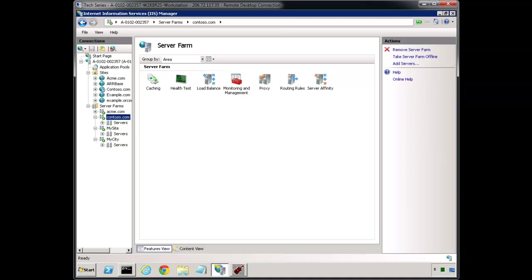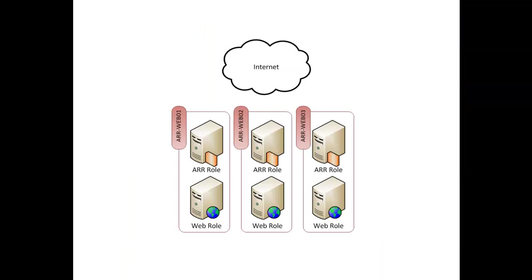Let's start by picturing a multi-server situation. In this diagram we have three servers: ARR web 01, 02, and 03. The ARR role takes the incoming request and hands it off to the web role. A request may come into any one of the three nodes — and coming up in the next couple of weeks I'll talk about how to load balance ARR itself. You can see the ARR role is completely independent of the web role, but we may not want to do this with six servers. We may say: let's use three servers instead.